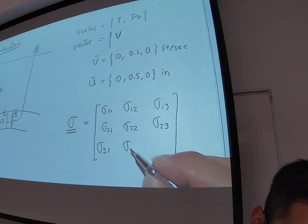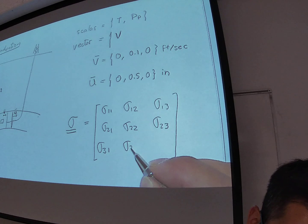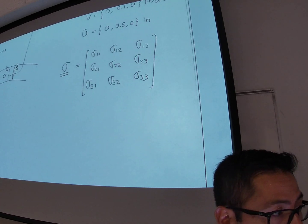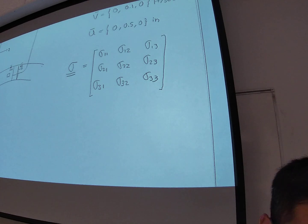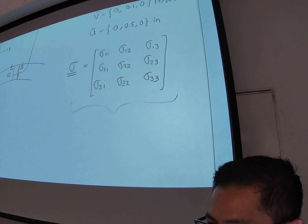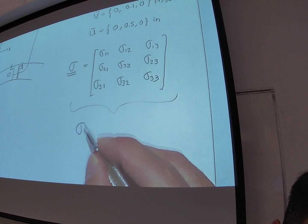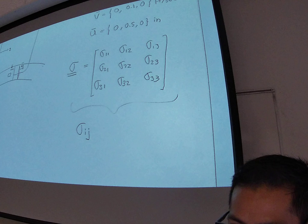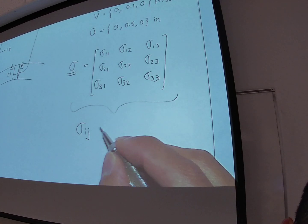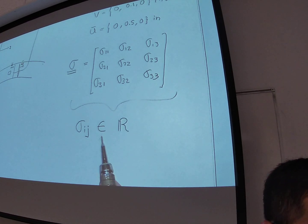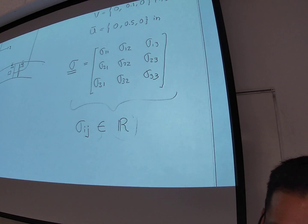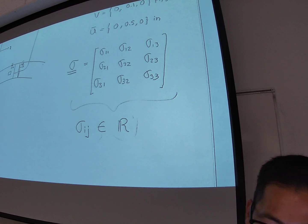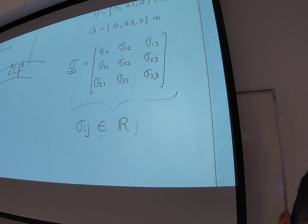In this matrix, the first index is the row number and the second index is the column number. This is the stress tensor. All the values sigma-ij, where i and j each go from one to three, are real numbers — meaning they can be negative, decimal, or any real value, but not imaginary.